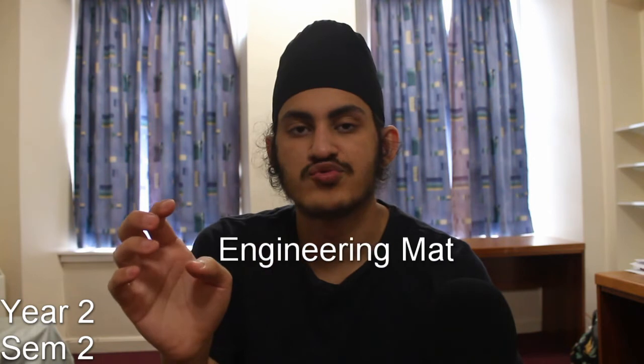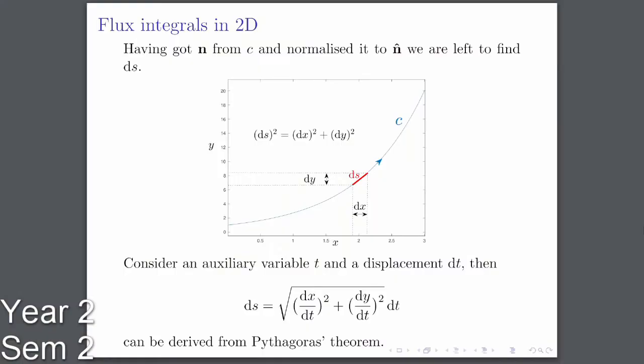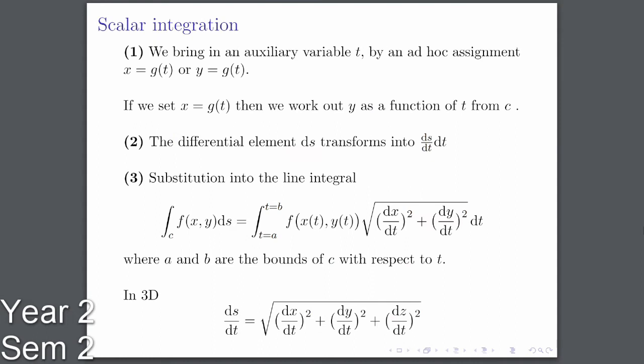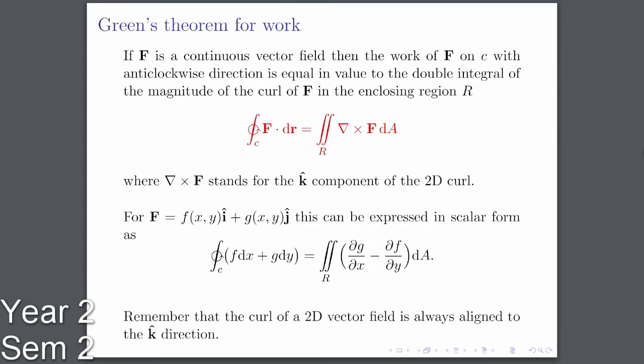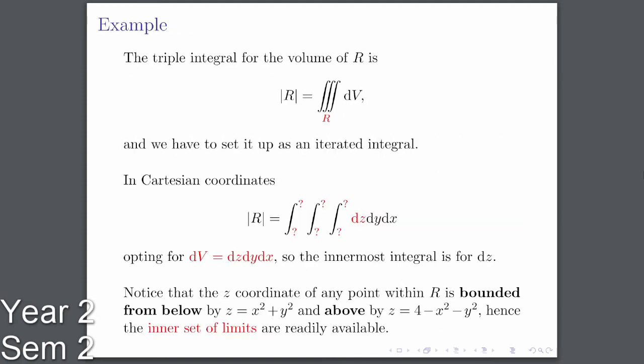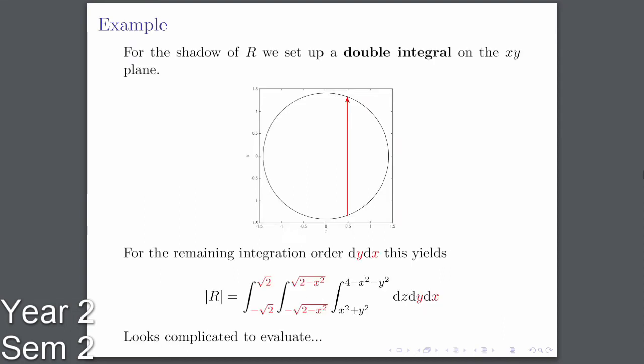I also had Engineering Maths 2b, which was the toughest maths course I had in university. We learned about gradient, divergence, and curl of vector fields, line integration, flux, Green's theorem for flux, and triple integration. We also covered Bayes' theorem and hypothesis testing.